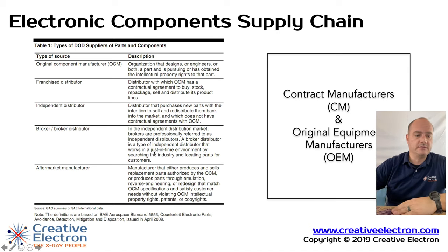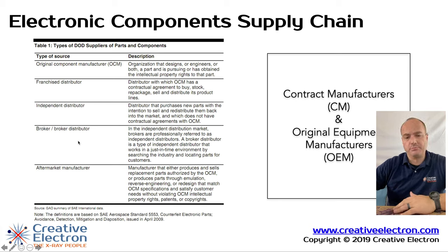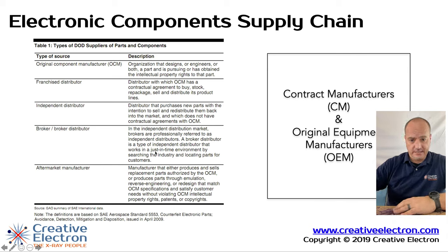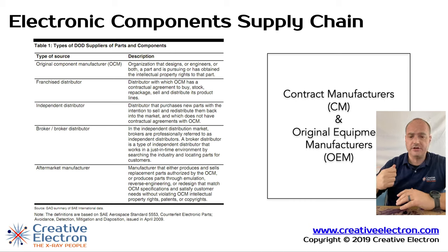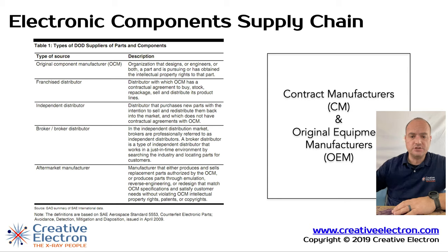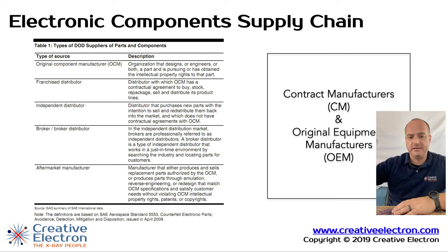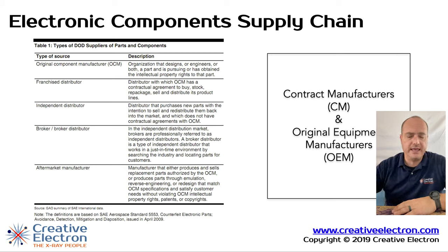Brokers act similarly to independent distributors, but they don't have any inventory. Brokers are your typical middleman. You call them, say you need component 123, and they go ahead and call independent distributors, franchise distributors, and everyone else they know to find that component. When they find it, they make the connection and make some money in the exchange.